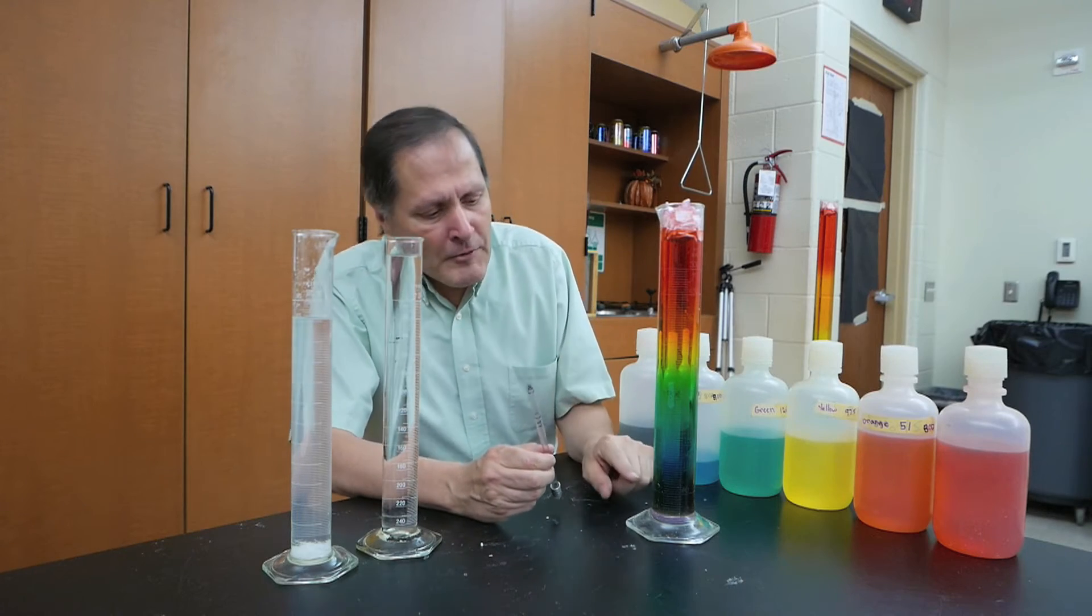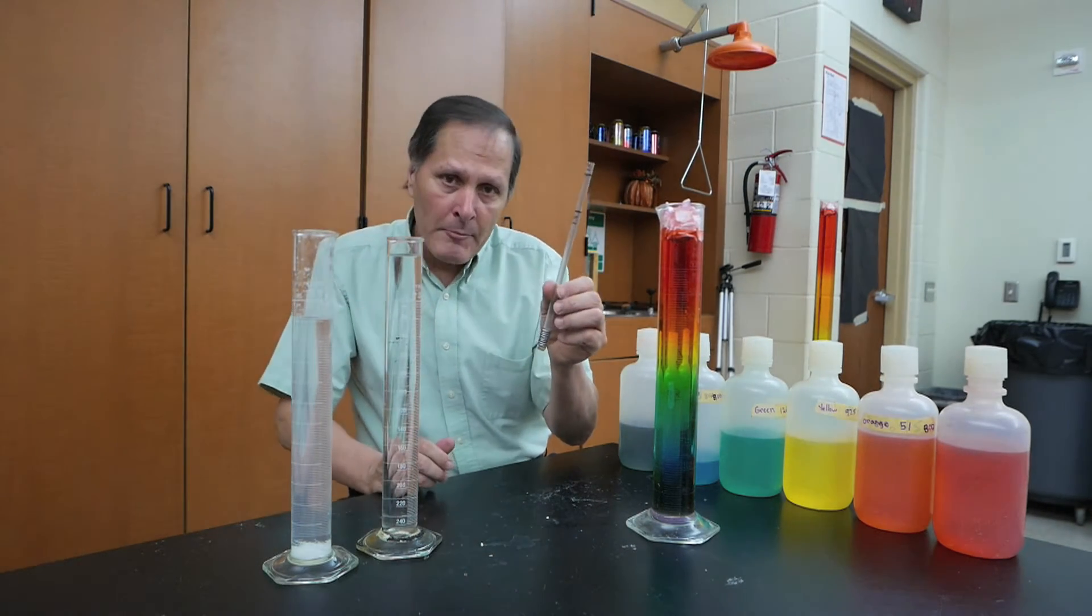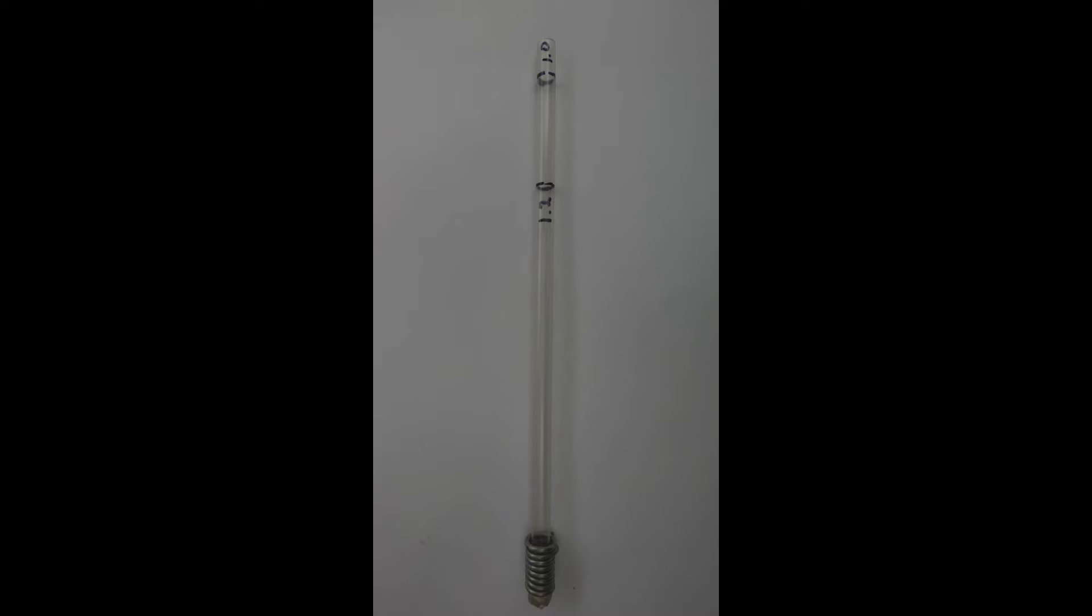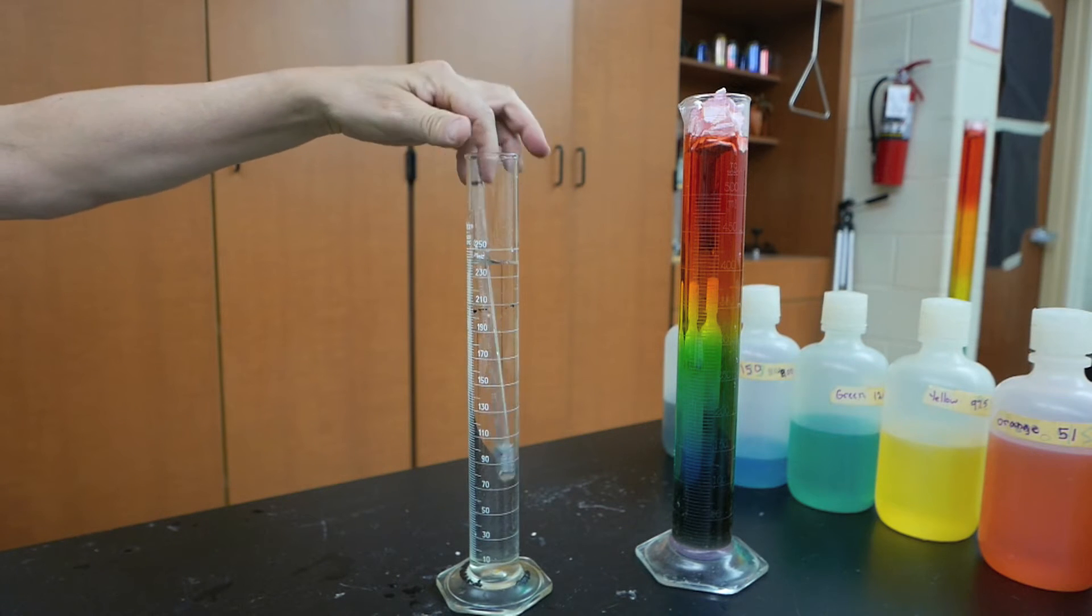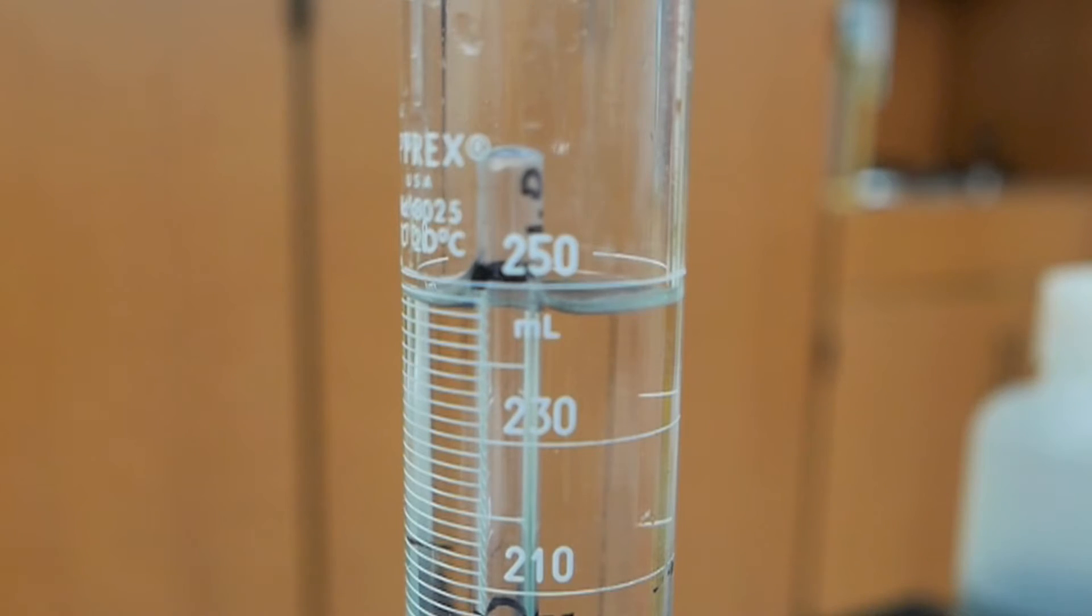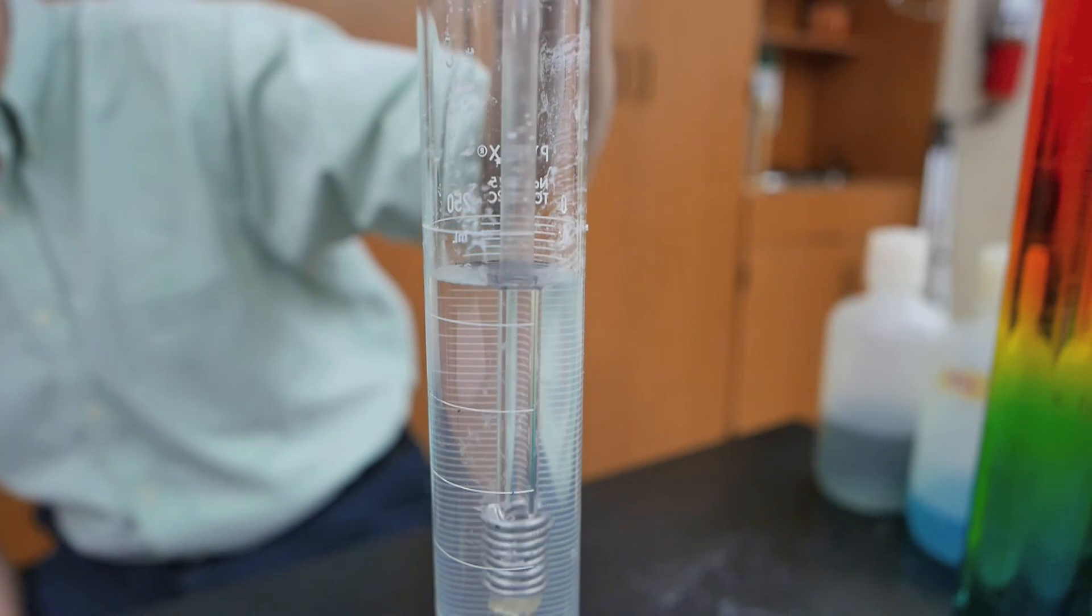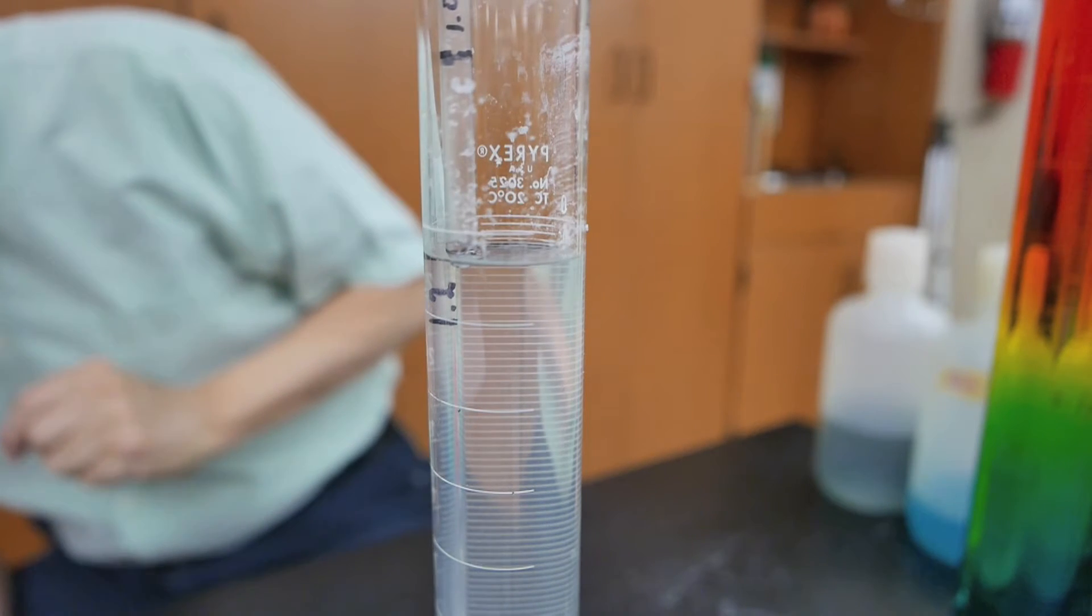Now if we want further evidence that the density is decreasing as we go up this column, we can use a homemade hydrometer. A hydrometer measures the density of a liquid by comparing its buoyant force to that of pure water. To get the value of 1 gram per milliliter, I put it into pure distilled water, noted where it was, then put a mark on the straw. The second mark is for a saturated solution of salt water, which has a density of 1.2 grams. Now let's test our other solutions and see where they fall.